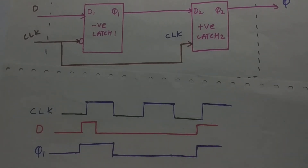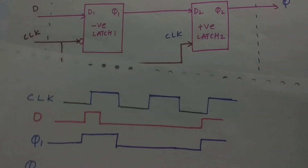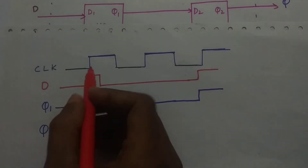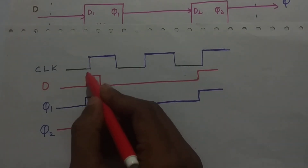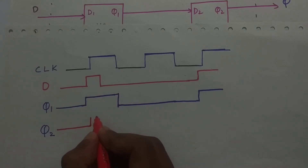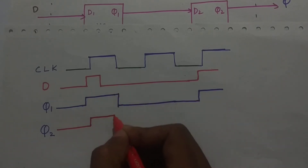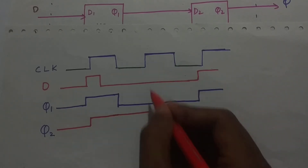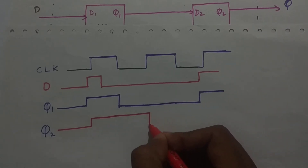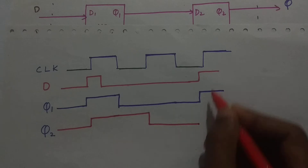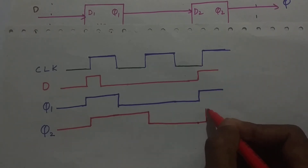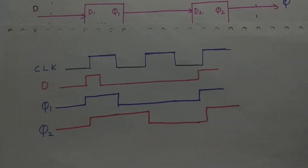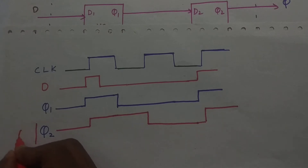Now let us draw a waveform for Q2, or output Q. It will be active in the positive region. As you can see, this region starts over here — it is high and it doesn't go low here, so it will continue till the next positive region. In that positive region it is seeing low, so it will go low and continue till next positive region. In this positive region it will be high again. So this is Q.